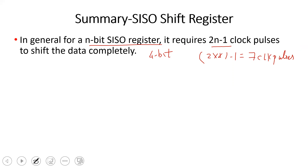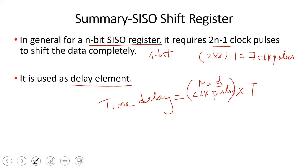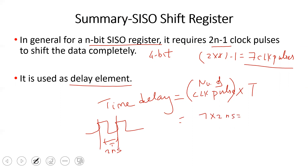If you use an 8-bit register, it takes 2 times 8 minus 1 equals 15 clock pulses to shift the data. Because of this time delay behavior, a SISO shift register can be used as a delay element. You can use it to provide a certain delay of a few seconds or nanoseconds — for example, a 4-bit register can provide a 14 nanosecond delay.